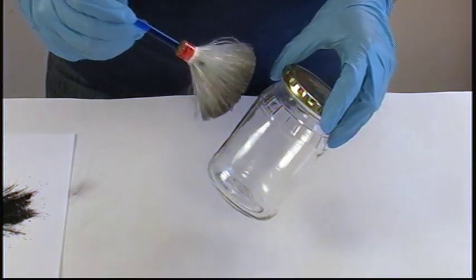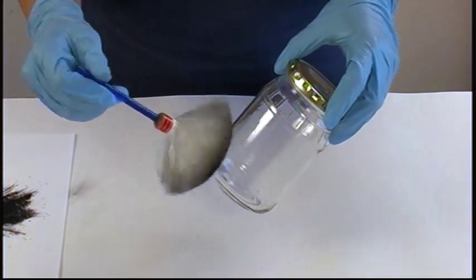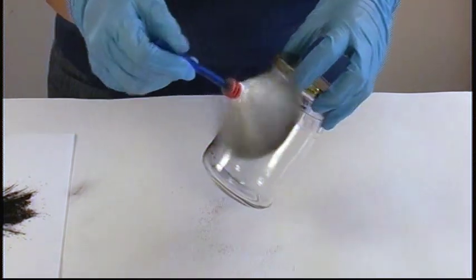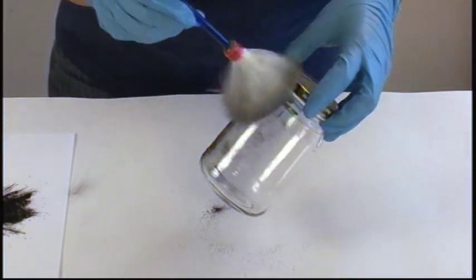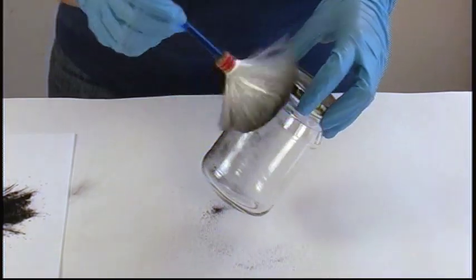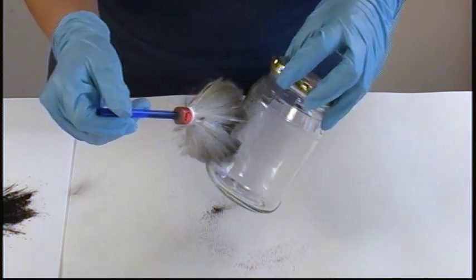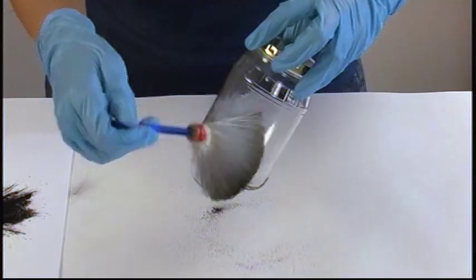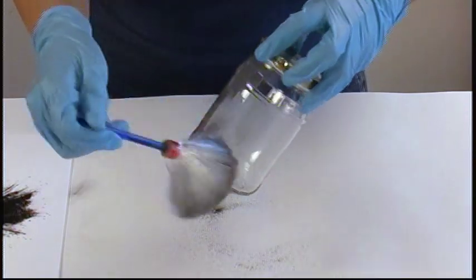So when you're doing this you don't want to make too much contact, you just want to go in a nice easy back and forth twirling method. You don't want to press too hard because you can either smudge the print or over develop the print.